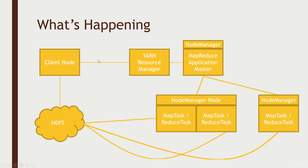At a high level: you kick things off from a client node; a resource manager keeps track of all the different computers and their availability; an application master keeps an eye on all your tasks; and node managers keep an eye on the individual PCs. They all talk to your data on the HDFS cluster. One important point: when the resource manager decides where to launch a mapper or reducer, it tries to run it as close to the data as possible. Since HDFS input data is split into blocks replicated across multiple nodes, it tries to run the mapper on the same machine that holds a copy of those blocks, minimizing data sent over the network.